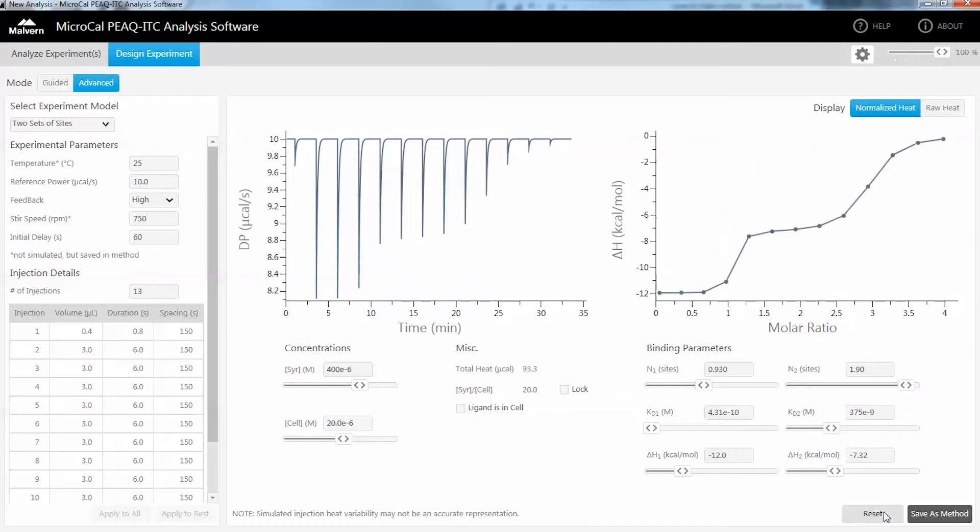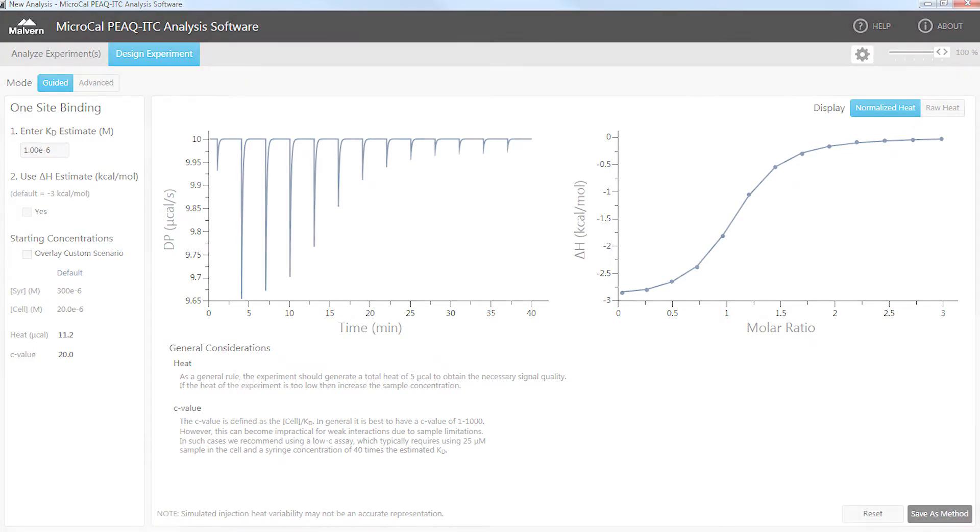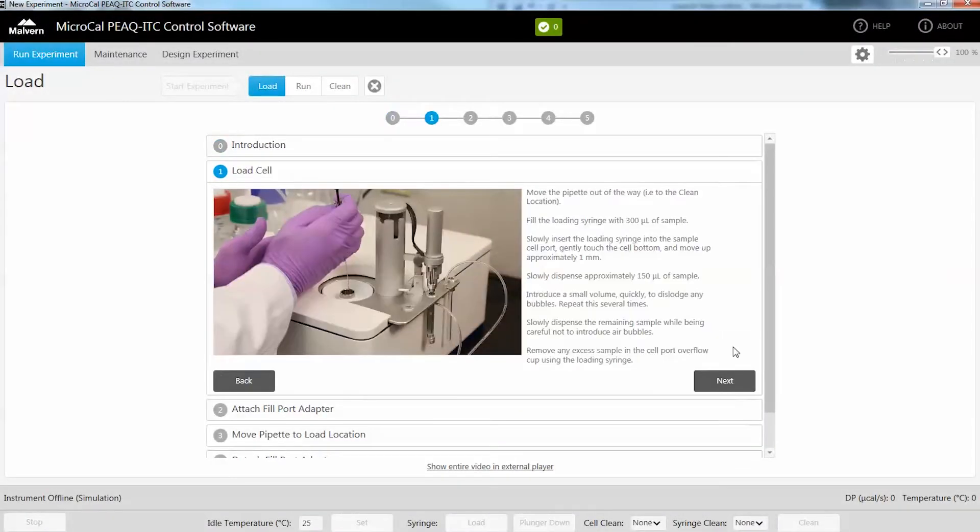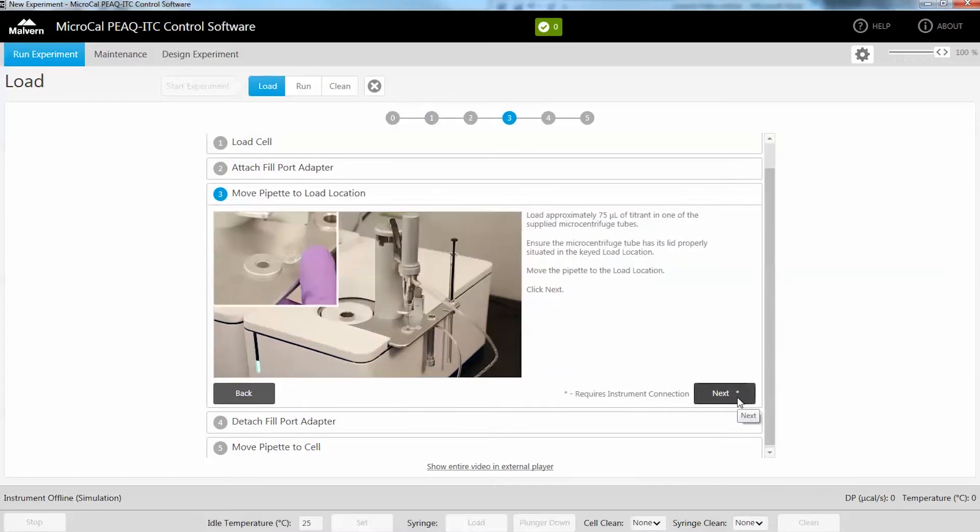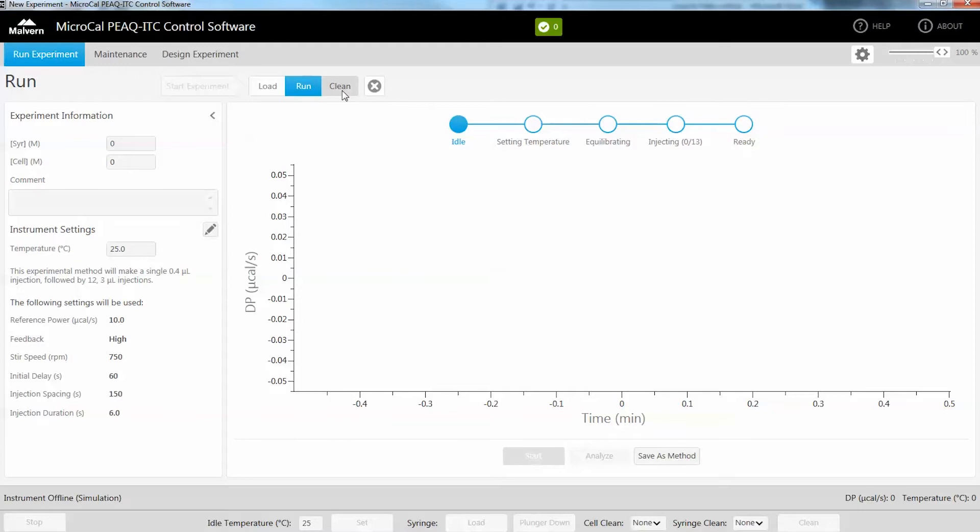For the less experienced user, the experimental design tool suggests run parameters and sample concentrations based on an estimate of the binding affinity. Once the concentrations and experiment setup are decided, you can follow the guided workflows showing you how to load the instrument. This is ideal for new or infrequent users.